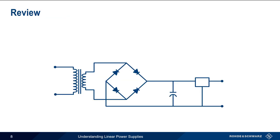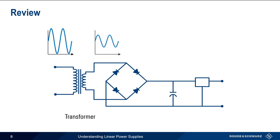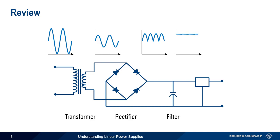Let's review the stages in our linear power supply. The high voltage mains AC is stepped down to a lower voltage AC using a transformer, and is then rectified to produce a pulsating positive voltage. A capacitor-based filter then smooths out this pulsating voltage to produce a mostly flat DC voltage. Optionally, a regulator can be used to keep the output voltage level constant when the input voltage or the load impedance changes.